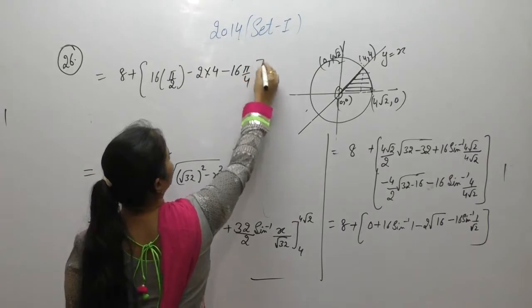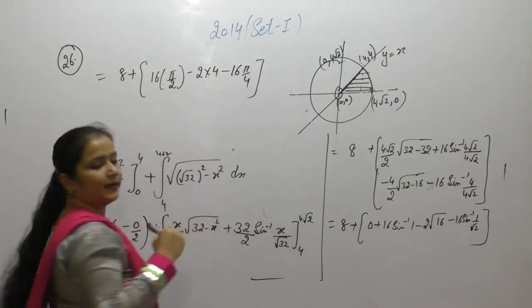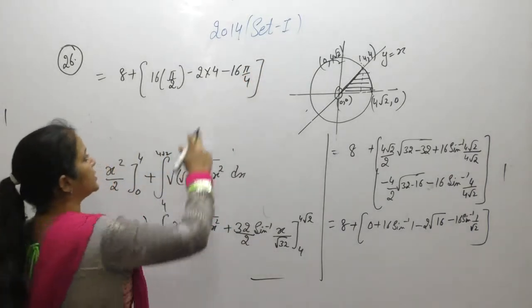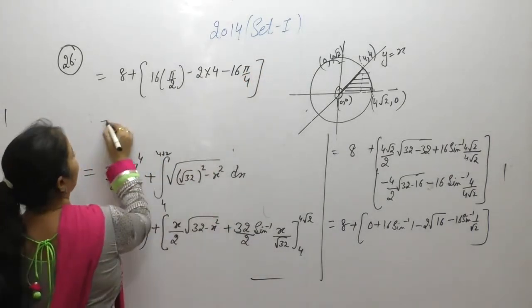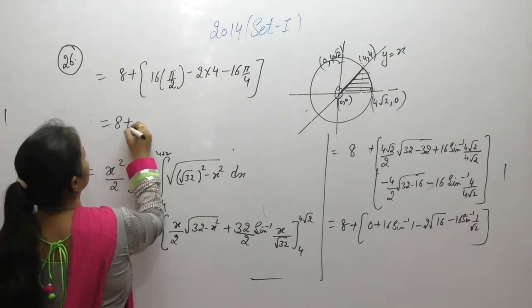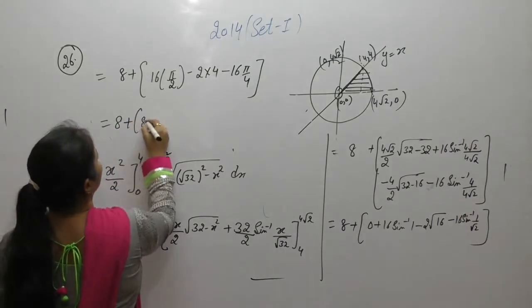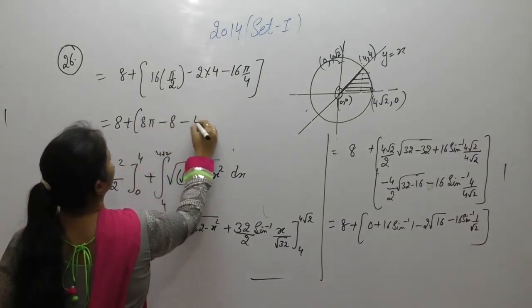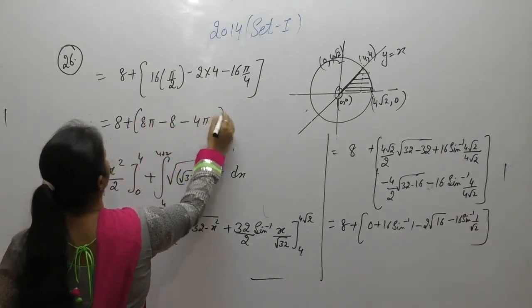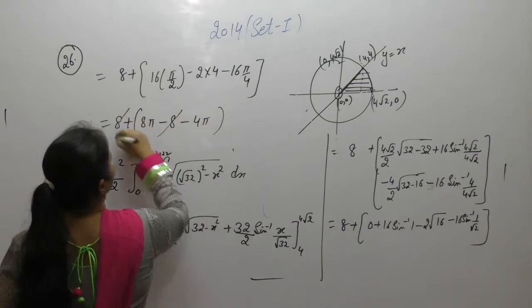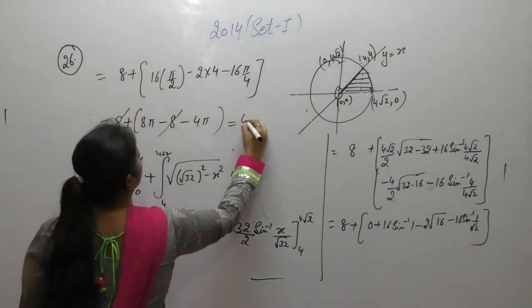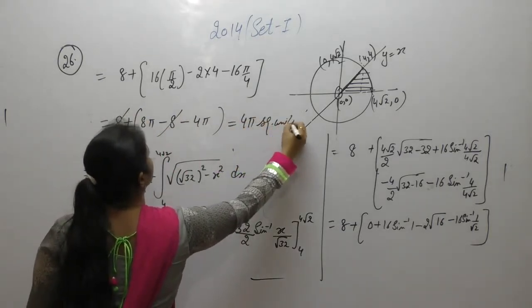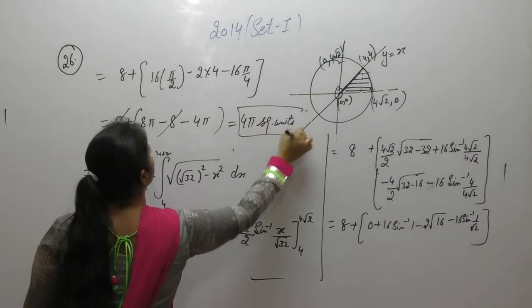Since sin⁻¹(1) = π/2 and sin⁻¹(1/√2) = π/4, simplifying gives 8 + 8π − 8 − 4π = 4π square units.